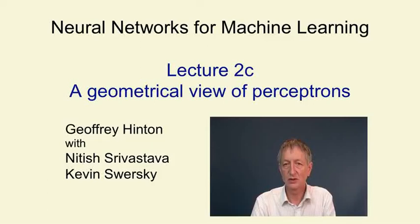In this video, we're going to get a geometrical understanding of what happens when a perceptron learns. To do this, we have to think in terms of a weight space. It's a high-dimensional space in which each point corresponds to a particular setting for all the weights. In this space, we can represent the training cases as planes, and learning consists of trying to get the weight vector on the right side of all the training planes.